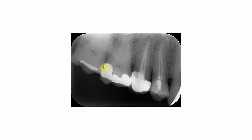If you compare it to the MOD amalgam filling, you will see that the radio-opacity is much more in the amalgam filling. You can see that the amalgam is extending from the mesial surface of the upper six to the distal surface, and underneath the distal filling box you will see a material that has a lesser radio-opacity than the amalgam filling.